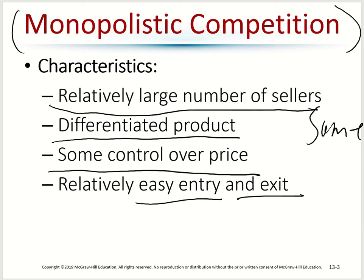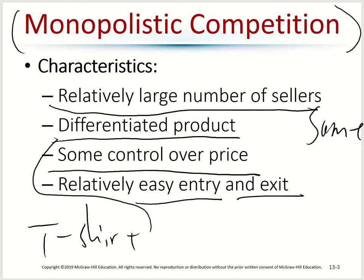A good example of monopolistic competition is the t-shirt market. There are different brands — Abercrombie, Gap, J.Crew, Walmart — and if you look at the t-shirts from those stores they all look pretty similar: similar design, similar colors, similar material. But the prices are very different. Some brands charge very high prices and some very low, because of different design and branding — that's what makes them differentiated products.